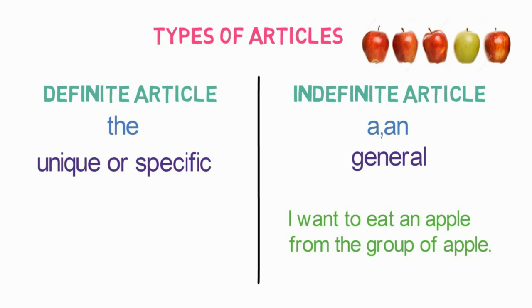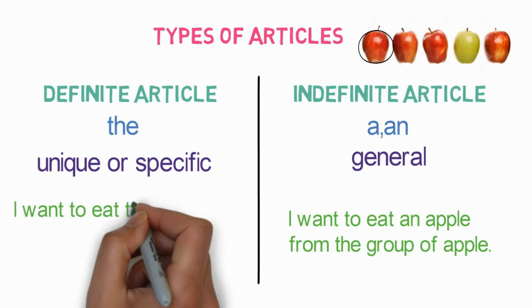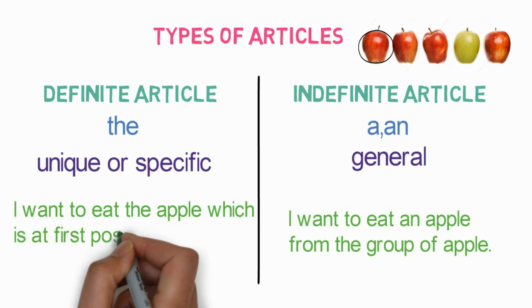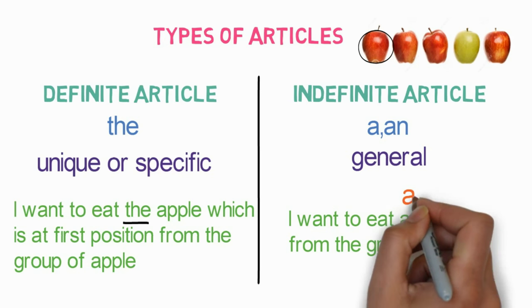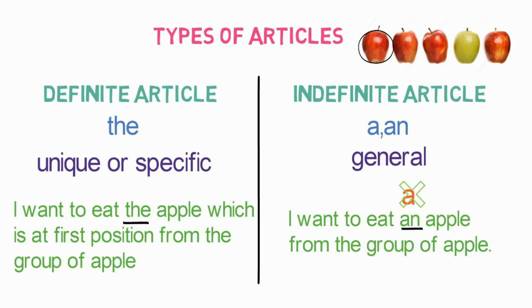Now suppose you want to eat a specific apple from the group, let's say the first one. You will say, 'I want to eat the apple which is at the first position from the group of apples.' You can notice here how we use 'the' for pointing out a specific apple and 'an' for a generalized apple. You can also notice that we have used 'an' and not 'a' for pointing to an apple in a general context.